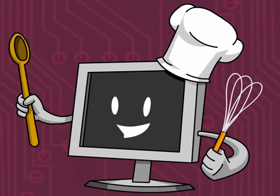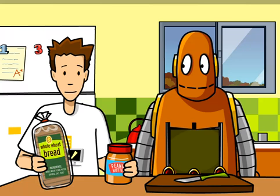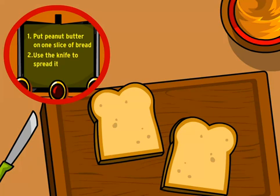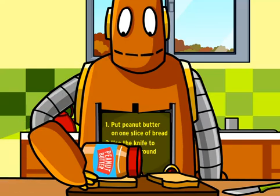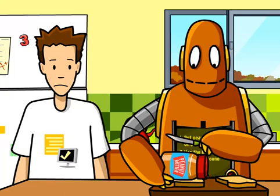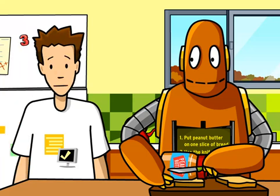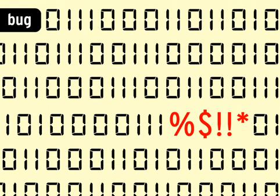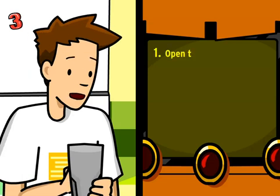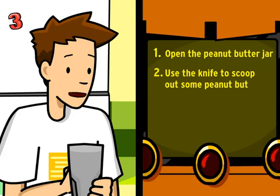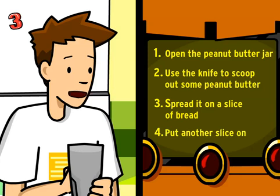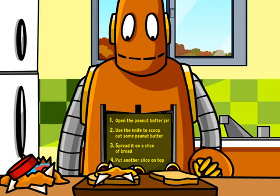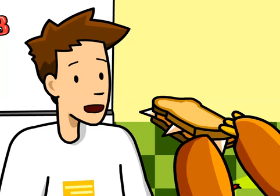It is sort of like making a recipe. Instead of telling a computer what to do, you're telling it how to do it. Speaking of recipes, how about making a peanut butter sandwich for lunch? Moby, first put peanut butter on one slice of bread, then use the knife to spread it around. Okay, keep it together. Programmers have to be patient. You have to keep refining or iterating your code until it works the way you want it to. If there's a mistake or bug, you have to find out where it is and fix it. Moby, first open the peanut butter jar, then use the knife to scoop out some peanut butter, then spread it on a slice of bread, and finally put another slice on top. That's closer, but I think I'll just get lunch at school.